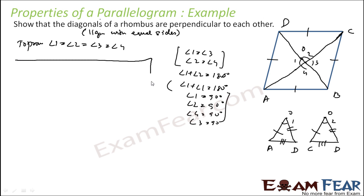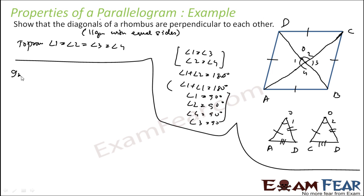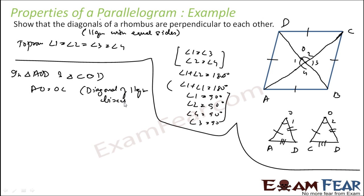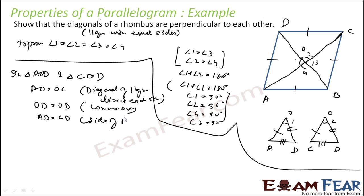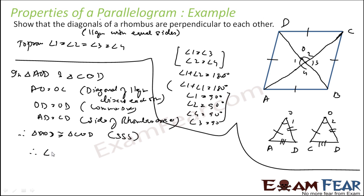That was rough work. Now let's write it formally. In triangle AOD and triangle COD: AO = CO — diagonals of a parallelogram bisect each other. OD = OD — common side. AD = CD — sides of a rhombus are equal. Therefore, triangle AOD is congruent to triangle COD by SSS rule. Therefore, angle AOD = angle COD, i.e., angle 1 = angle 2.